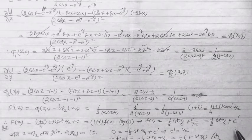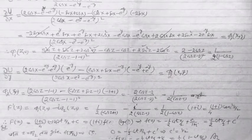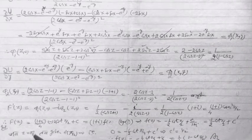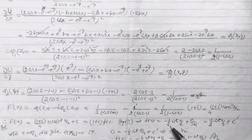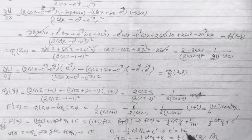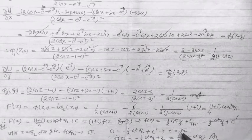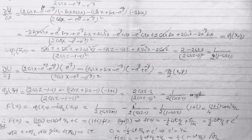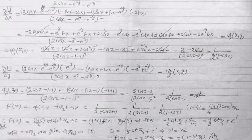Integration का constant निकालने के लिए condition दी है: f(π/2) = 0। जब z = π/2 रखते हैं: 0 = -½·cot(π/4) + C'। cot(45°) = 1, इसलिए C' = ½। Therefore f(z) = -½·cot(z/2) + ½ = ½(1 - cot(z/2))।